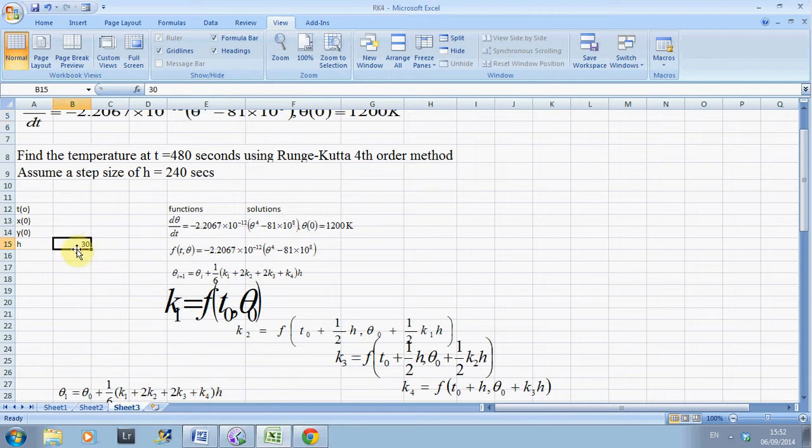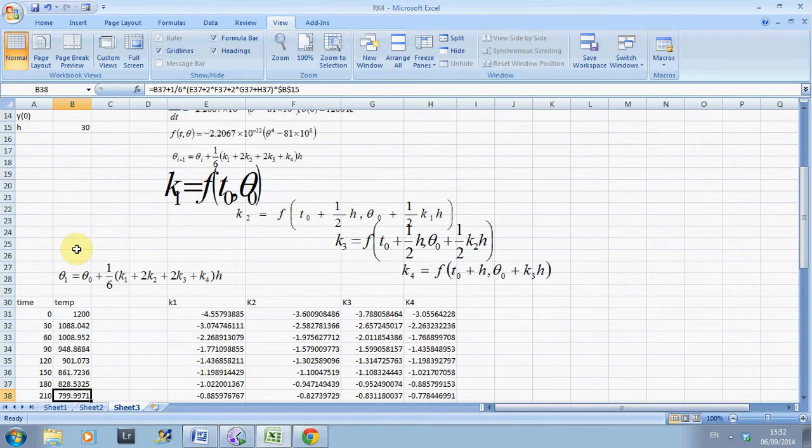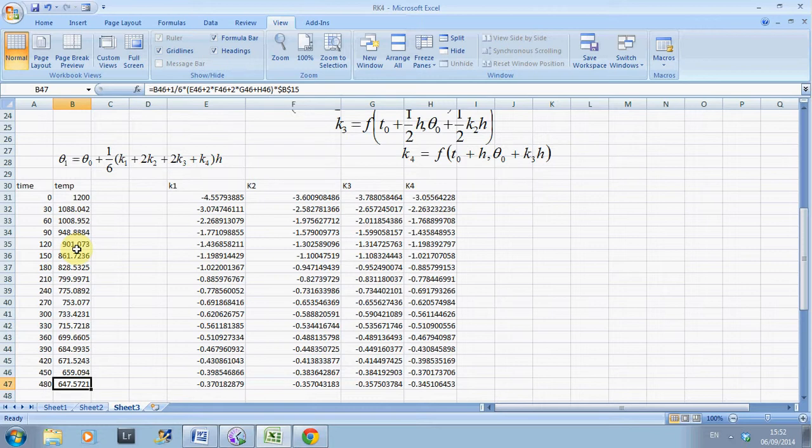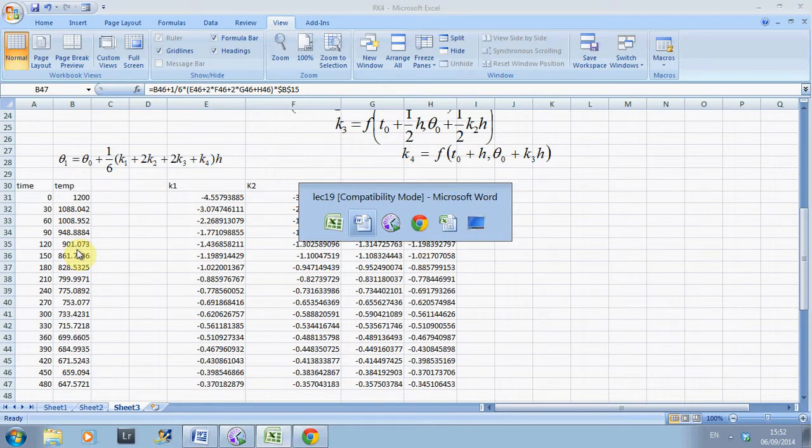The smaller the step, the closer you're going to get to the true answer. The formulas are exactly the same, except you just drag down more, and for 487, you get 647.5721. Go back to the Word document.